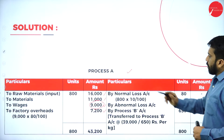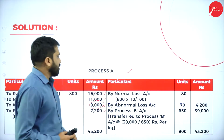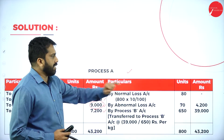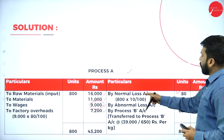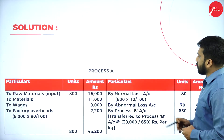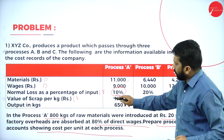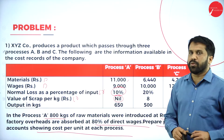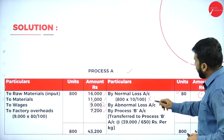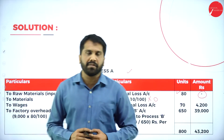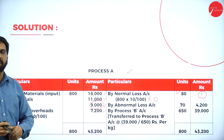For the credit side, normal loss is 10% of input: 800 × 10% = 80 units. The scrap value per unit is Rs. 0, so the value of normal loss is Rs. 0. Now, output from the question is 650 kg. To find abnormal loss: 800 − 80 − 650. The result will indicate whether there is abnormal loss or abnormal gain.